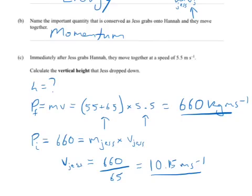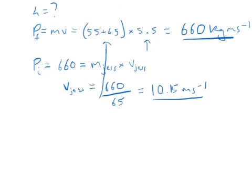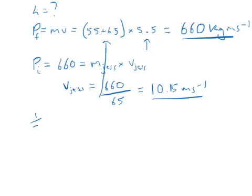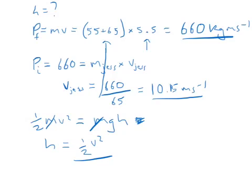The next stage is to use the kinetic energy. Half mv squared will equal mgh, which we don't know yet. I'll calculate the left hand side. Now let's rearrange for the height, because we can get rid of the masses. The height will equal half v squared divided by g.